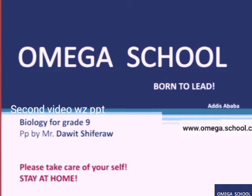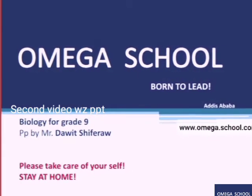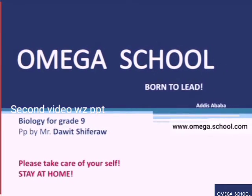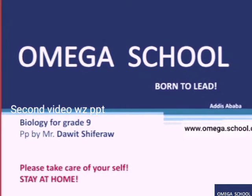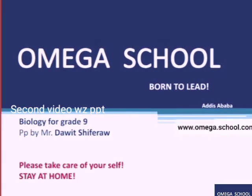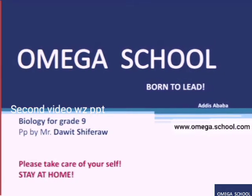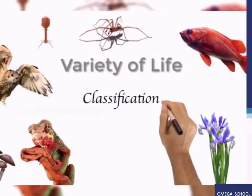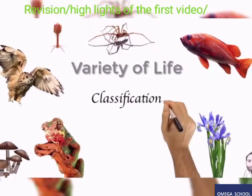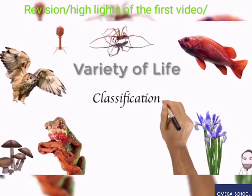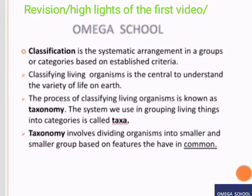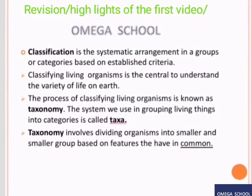Hello everyone, this is the second video. In the first video I spoke briefly to save time and space, but now let me explain in a good way. Let's start by revising the previous topic about classification. Classification is a systematic arrangement into groups, and the process of classifying living organisms is called taxonomy.